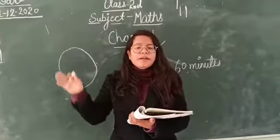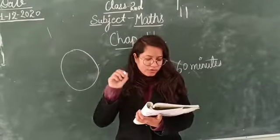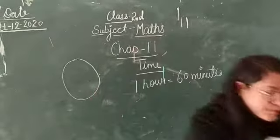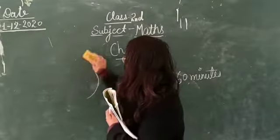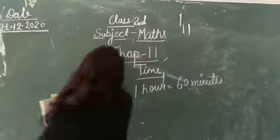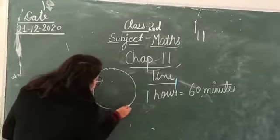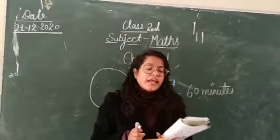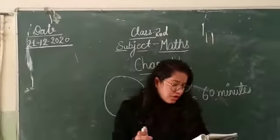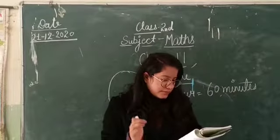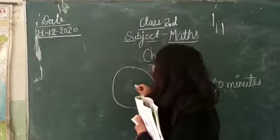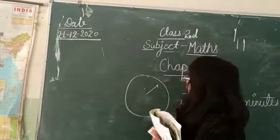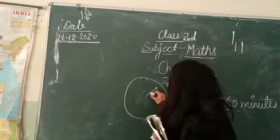Now we learn how many times we can read the clock. Let's suppose this is the clock. A clock has two hands — one is a shorter hand and one is a longer hand. The one that is bigger and longer is the longer hand, and that is the minute hand.